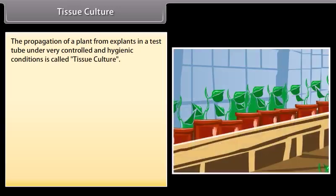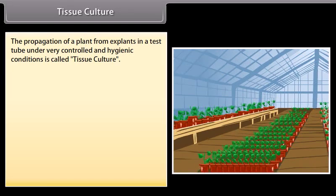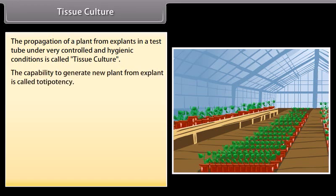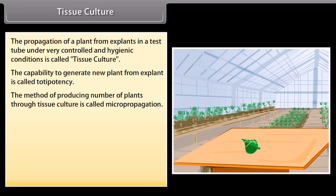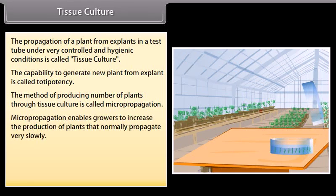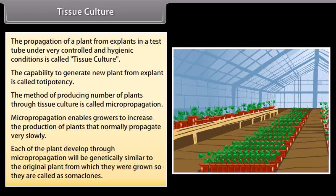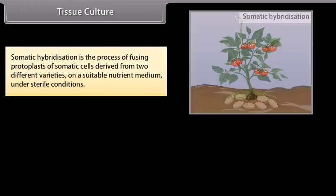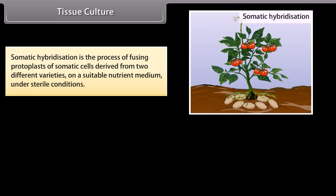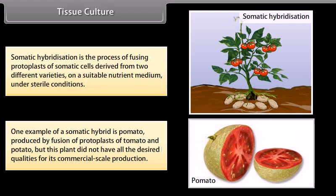Tissue culture: The propagation of a plant from explants in a test tube under very controlled and hygienic conditions is called tissue culture. The capability to generate a new plant from an explant is called totipotency. Producing plants through tissue culture is called micropropagation. Plants developed through micropropagation are genetically similar to the original plant and are called somaclones. Somatic hybridization is the fusion of protoplasts of somatic cells from two different varieties. One example is pomato, produced by fusion of protoplasts of tomato and potato, though it did not have all desired qualities for commercial production.